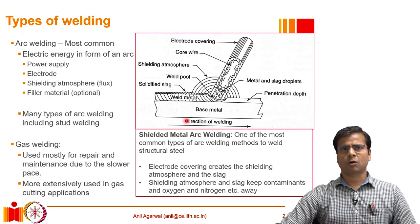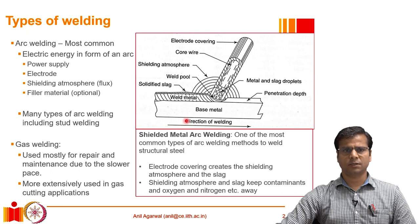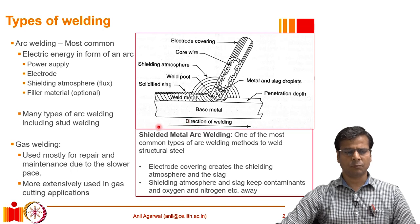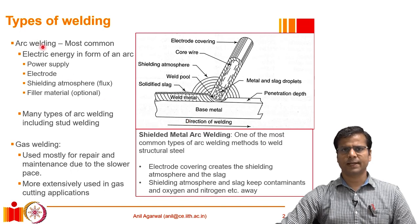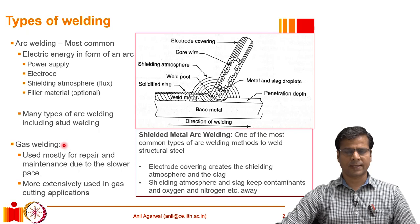Welding is a very common technique of joining structural steel members, used very frequently in construction. The most common type is arc welding, which uses electricity. The other type, gas welding, is relatively less used for structural applications and is more frequently used for cutting operations. We will talk about both in some detail.